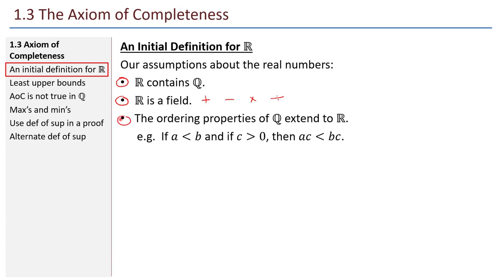I also assume the ordering properties of the rationals extend to the reals. So the things you learned in high school — for example, if two numbers a and b satisfy a is less than b, and if c is positive, then a times c is less than b times c — that kind of thing. So we imagine a number line. The real numbers has the same kind of ordering as the rationals. And now here is the big difference.